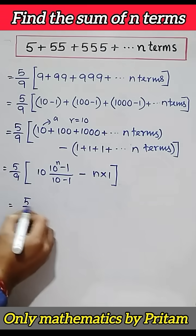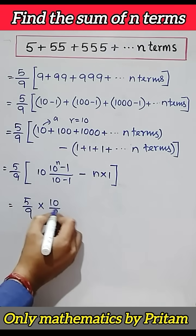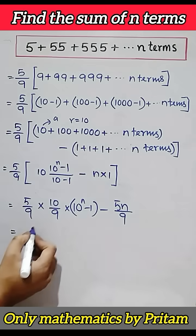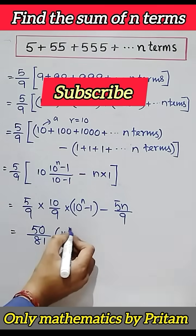So n into 1. Now 5 by 9 into 10 by 9 into 10 to the power n minus 1 minus 5n by 9. Now simplify, you will get the answer.